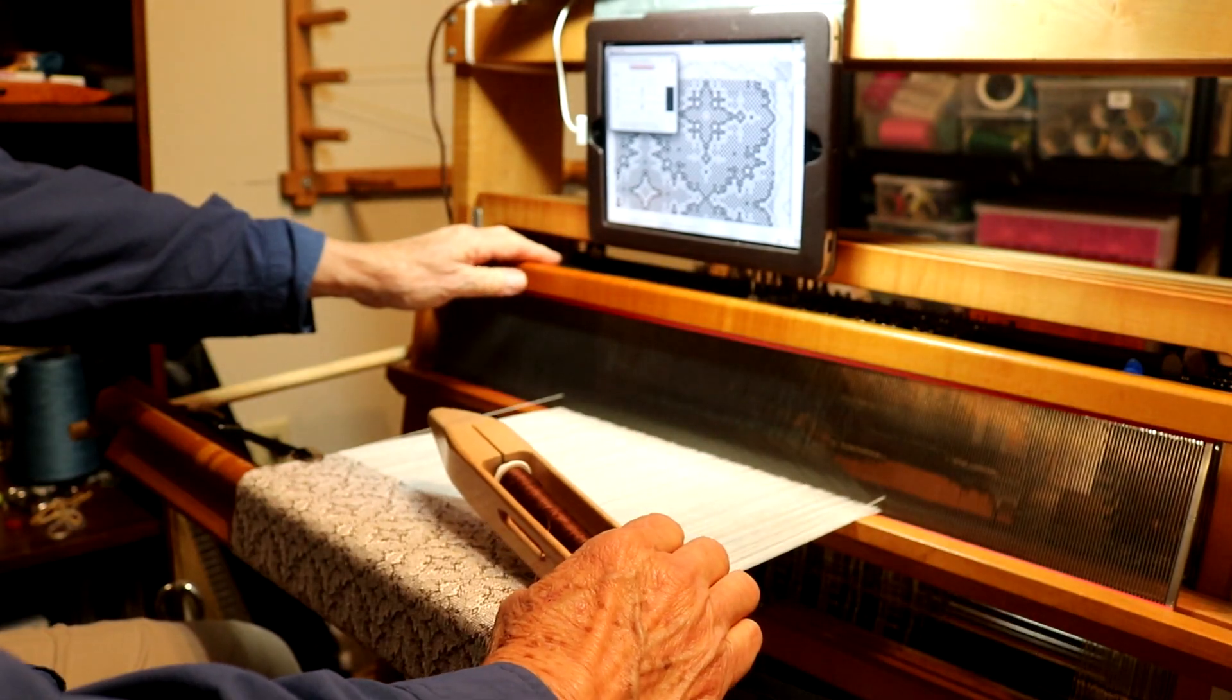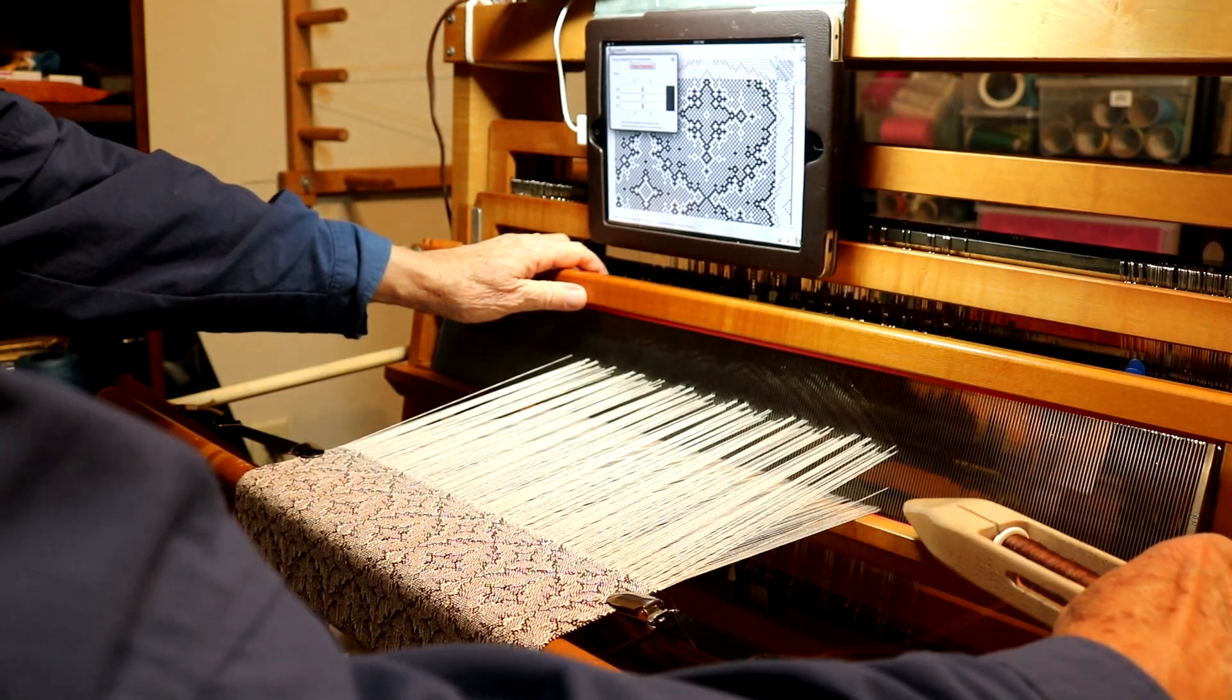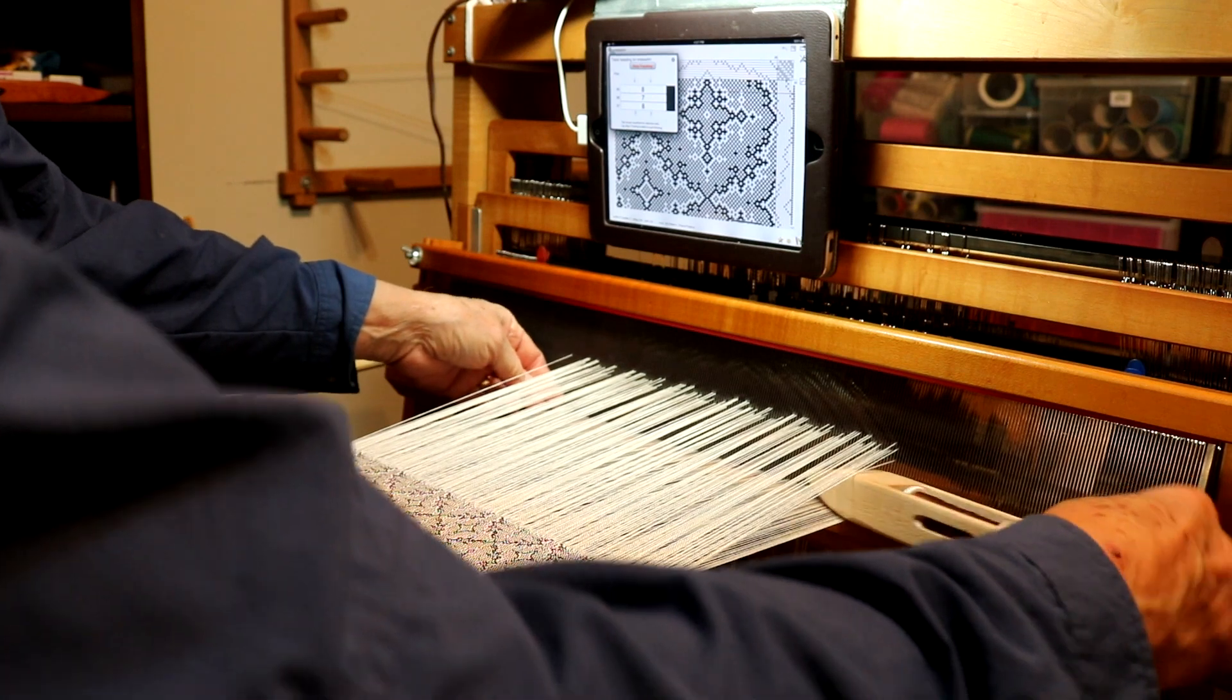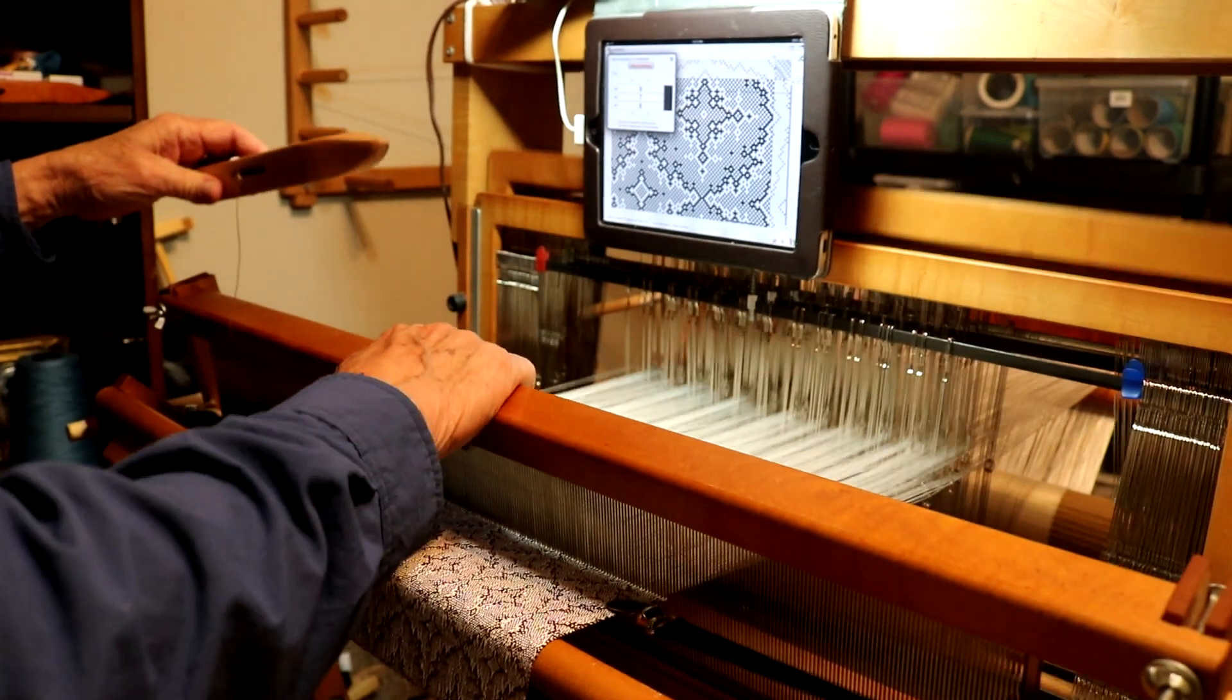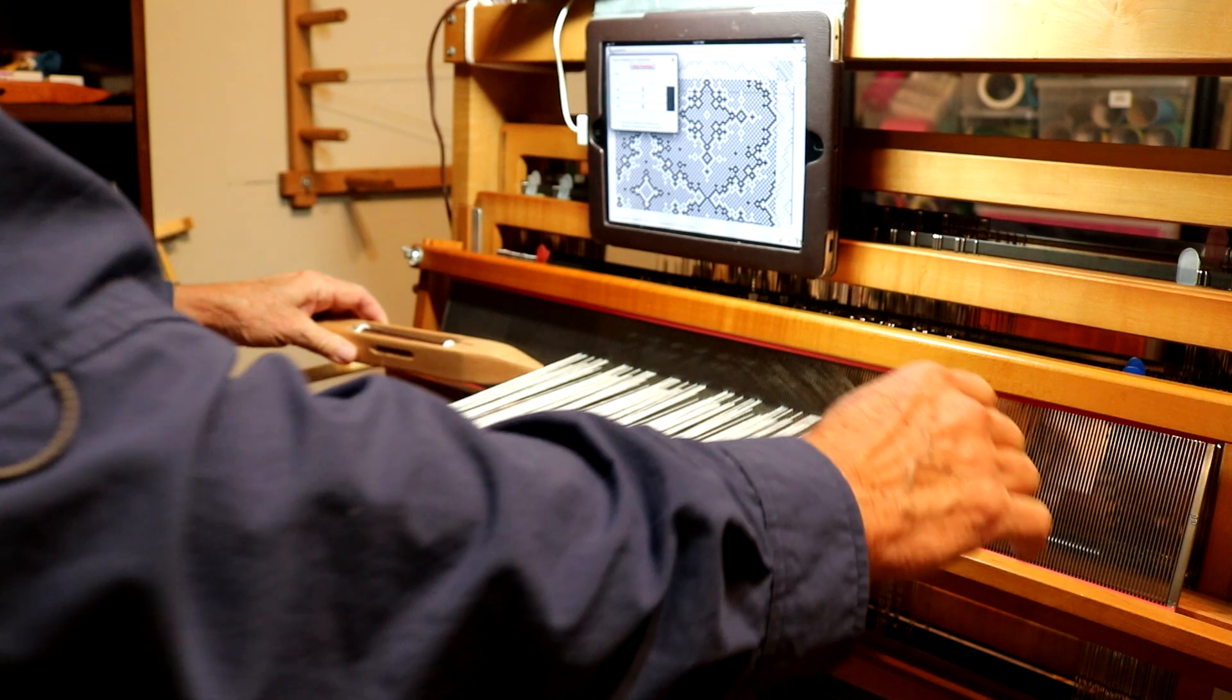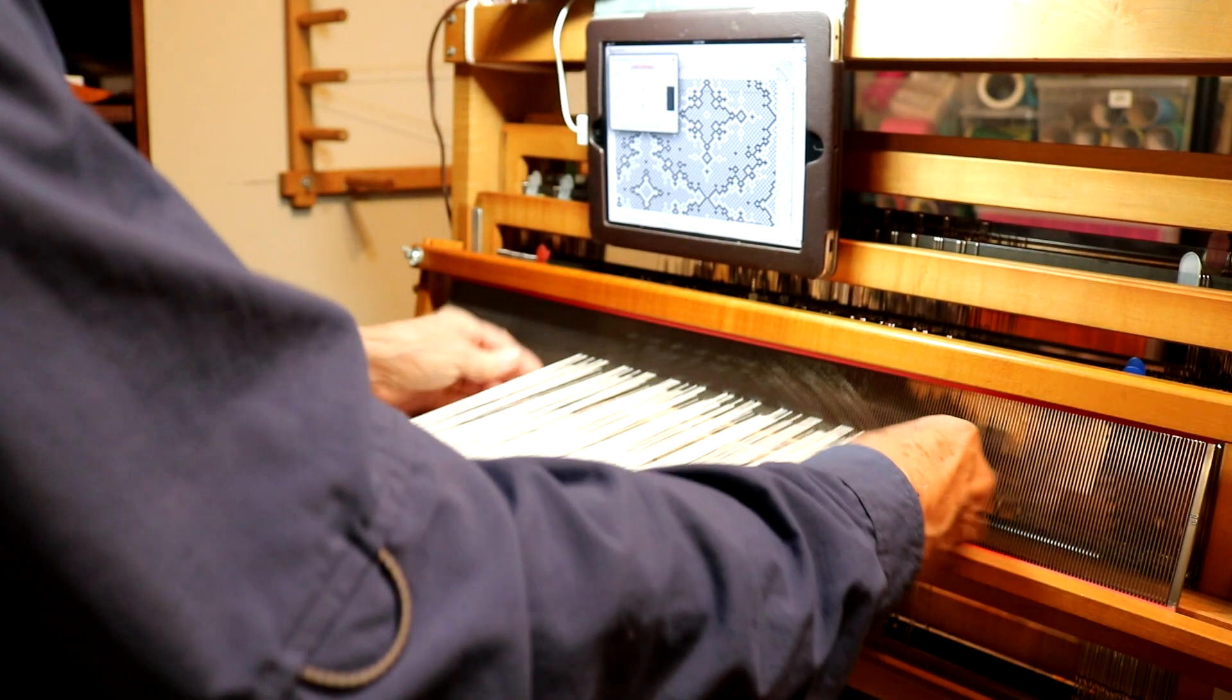As a reminder of what other weavers have mentioned in this group, to get less untwisting of the warp and less breakage, especially with the floating selvages: go over both floating selvages when going from left to right and under both selvages going right to left.